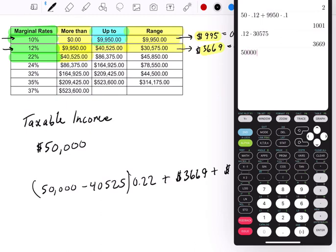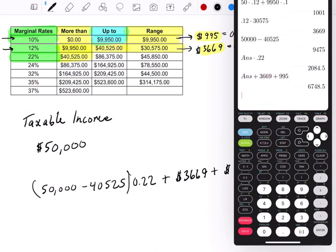So, first, $50,000 minus $40,525. Boom. Times 0.22. Boom. Plus $3,669 plus $995. Boom. That's their taxes. They're going to pay $6,748.50. And this is taxes paid.